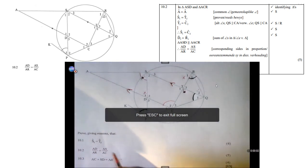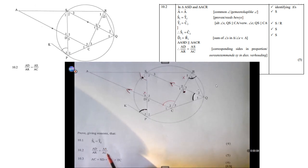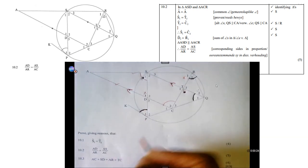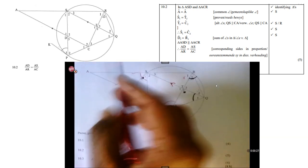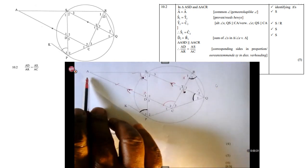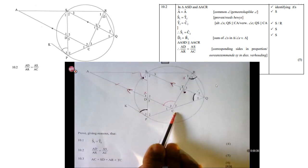Now the second question, prove that AD over AR equals AS over AC. Now how will we approach this problem? What you do is look at these sides and see where you see them in the sketch. Like AD, there you see AD. Where do you see AR? There you see AR, that whole line there. Where do you see AS? There you see AS, lies from there to there. And where do you see AC? There you see AC. So you must choose the correct triangles to prove them similar.